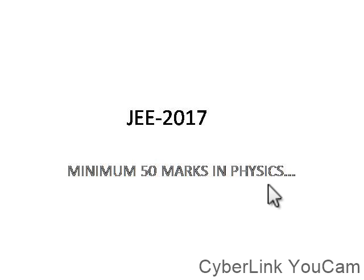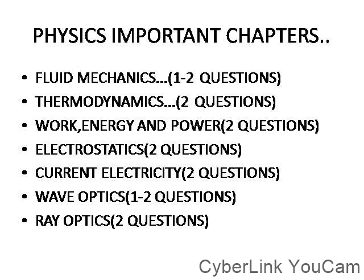To score minimum 50 marks in physics is very tough for the students, so today I am going to tell you how to score minimum 50 marks in physics. These are the important chapters you have to cover. First is fluid mechanics — from fluid mechanics there are always one to two questions asked in the JWE exam, from Bernoulli's theorem, Poiseuille's theorem, nozzles, or diffusers questions.